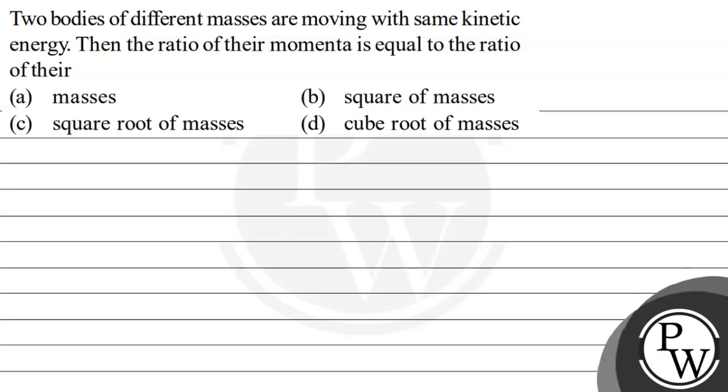Hello, let's read this question. The question says that two bodies of different masses are moving with same kinetic energy. Then the ratio of their momenta is equal to the ratio of their masses, square of masses, square root of masses, or cube root of masses. We have to choose the correct option.